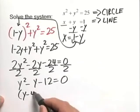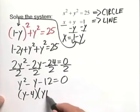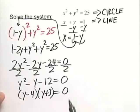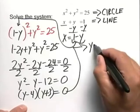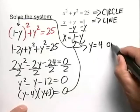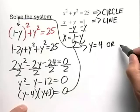Factor that out. y minus 4 and y plus 3 equaling 0. We've seen a lot of examples of this. From this, we have our two solutions: y is equal to 4 or y is equal to negative 3.